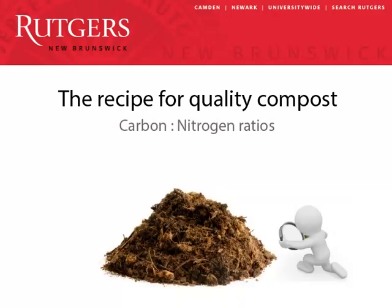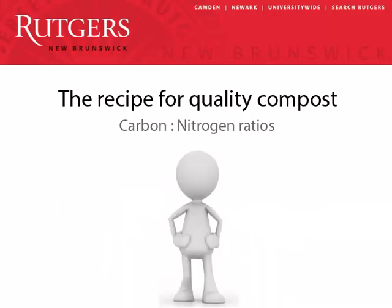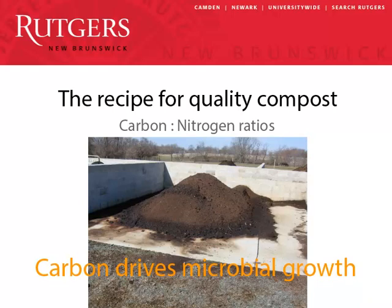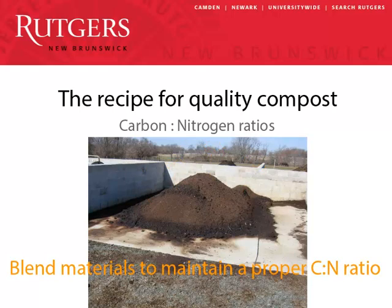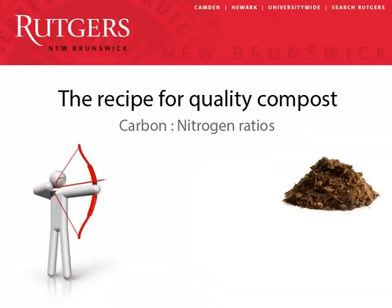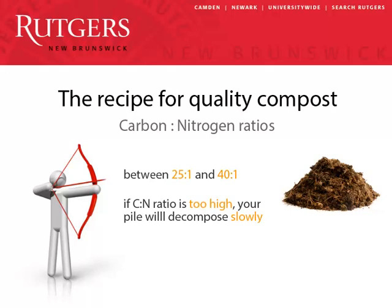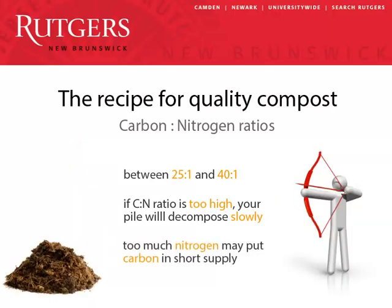Good compost overlords actively manage carbon and nitrogen ratios, a key measure of compost nutrient content. In your pile, carbon is an energy source that drives microbial growth. However, carbon is constantly escaping because carbon dioxide is released in the composting process. To compensate, you need to actively blend materials to maintain CN ratios. Aim for a CN ratio of between 25 to 1 and 40 to 1. If the CN ratio gets too high, your pile will decompose slowly and unprofitably. On the flip side, if you add too much nitrogen, bacteria may find energy-producing carbon in short supply.